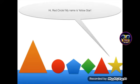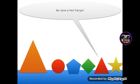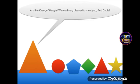Hi, Red Circle! My name is Yellow Star! My name is Red Triangle. My name is Green Diamond. I'm Blue Pentagon. And I'm Orange Triangle. We're all very pleased to meet you, Red Circle.